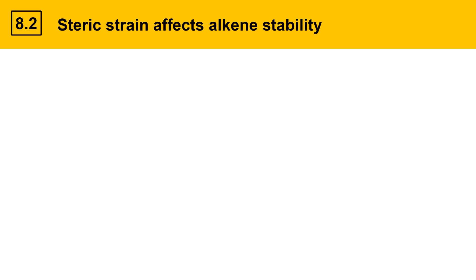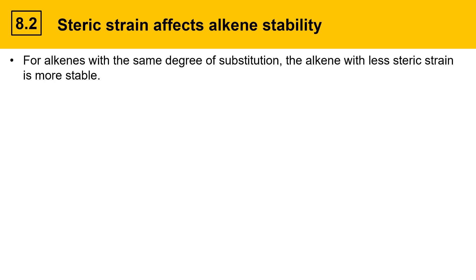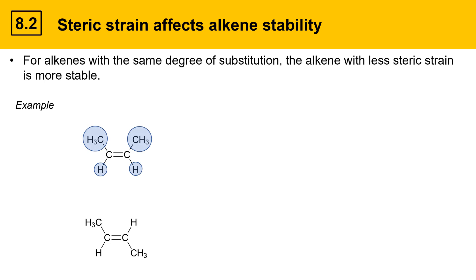Steric strain also affects alkene stability. For alkenes with the same degree of substitution, the alkene with less steric strain is more stable. Comparing cis and trans alkenes, hydrogen is a very small atom while a methyl group is larger. In the cis molecule, steric strain develops between the two methyl groups on the same side, leading to instability. Therefore the cis molecule is less stable and the trans is more stable.